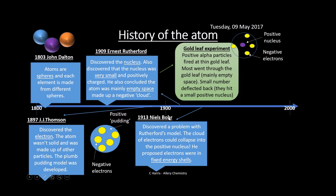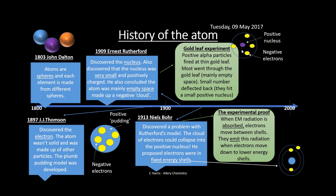In 1913, Niels Bohr identified a problem with Rutherford's model: if electrons were just a cloud around a positive nucleus, they would collapse inward due to electrostatic attraction. So Bohr proposed fixed energy shells instead. This is the model we're more familiar with today. He could actually prove it: when electromagnetic radiation is absorbed, electrons move between shells, and they emit radiation when moving down to lower shells. He measured this emission from atoms, and the only way to describe it was using shell theory — something the cloud model couldn't explain.